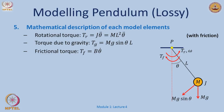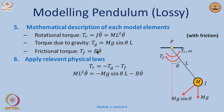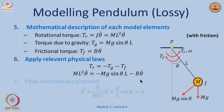Moving on to modeling friction in the pendulum: the frictional torque T_f is modeled as a relation between torque and theta-dot via a resistive element beta. Adding this, the restoring torque T_r equals minus T_g minus T_f, both acting in the opposite direction. Substituting T_r, T_g, and T_f gives a final mathematical model in terms of theta double dot, theta dot, and sin(theta). This represents a kinetic energy element, a potential energy element, and a frictional element — analogous to a mass-spring-damper system.